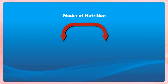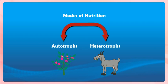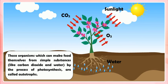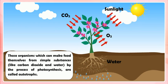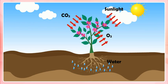Modes of Nutrition. All the organisms can be divided into two main groups: autotrophs and heterotrophs. Autotrophs are those organisms which can make food themselves from simple substances like carbon dioxide and water by the process of photosynthesis. Their mode of nutrition is called autotrophic. For example, green plants.